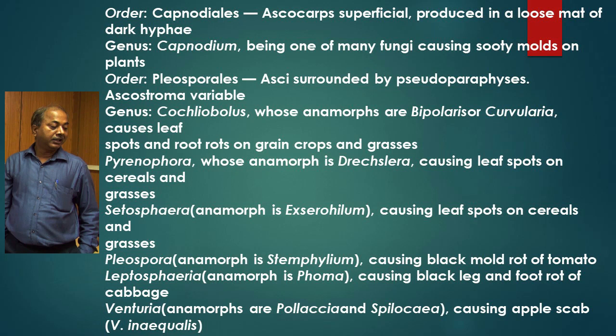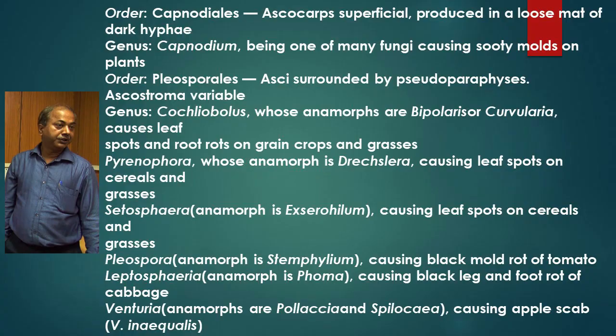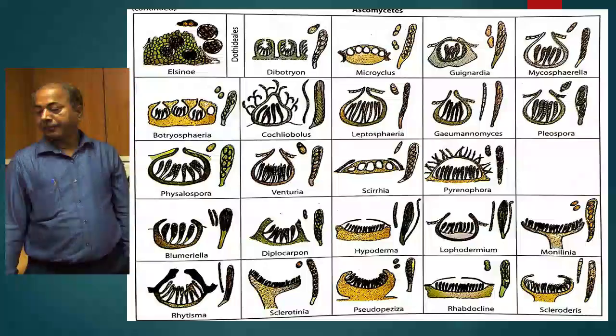Then Pierschia, Venturia pyrina, Guignardia (anamorph Phyllosticta), causing black rot of grapes. Then Apiosporina.